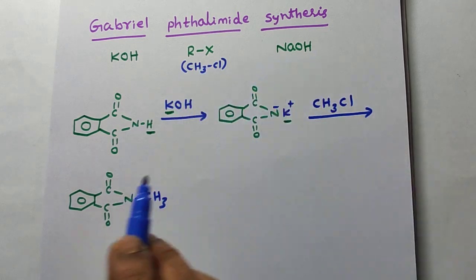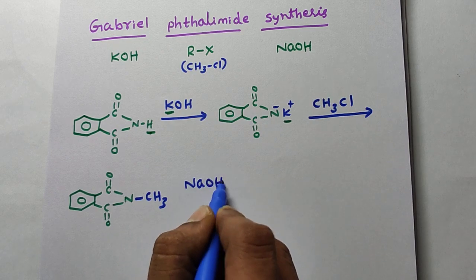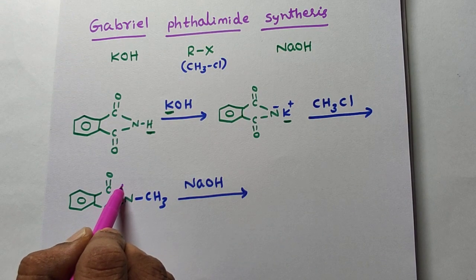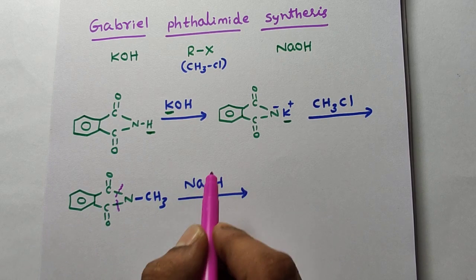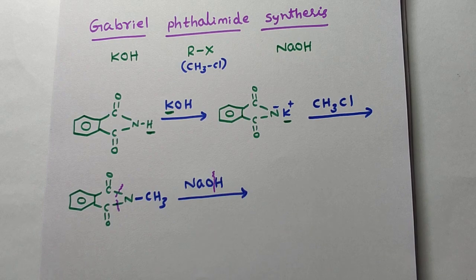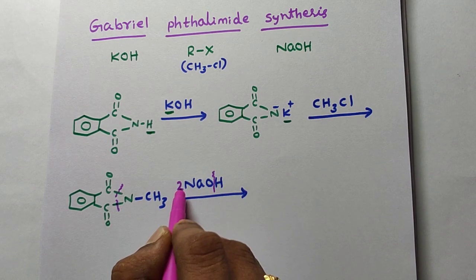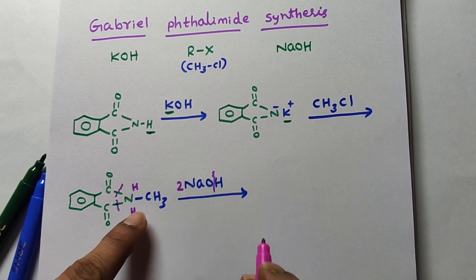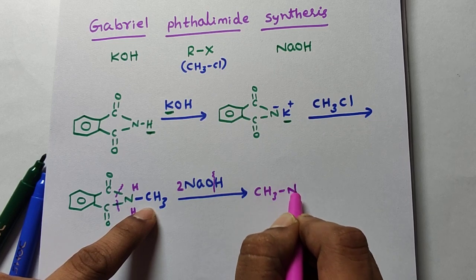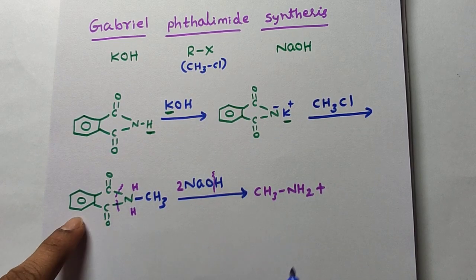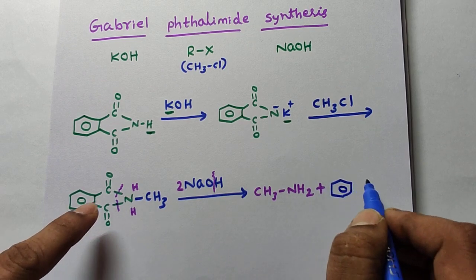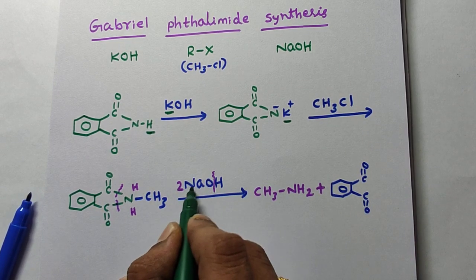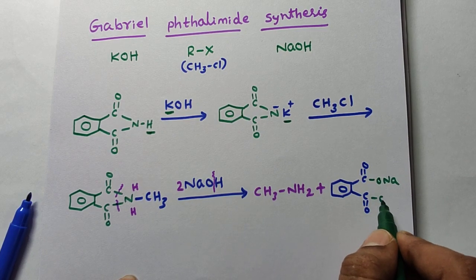Now the last step — the reagent is NaOH. Just to remember, this is not mechanism. So with NaOH, the first two hydrogens are released: one hydrogen here, one hydrogen there. The main product you get is CH3NH2 (methylamine). The remaining part is: benzene ring, C double bond O, C double bond O — with ONa on both sides. That gives two moles of ONa — sodium phthalate.